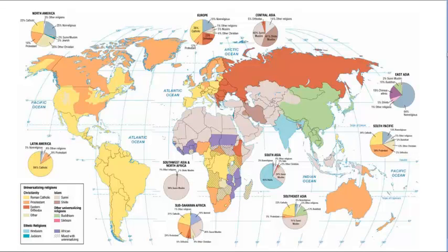This is figure 6.3 dealing with the spatial distribution of religions. It compares the universalizing religions with ethnic religions around the world. The three most important universalizing religions are Christianity, Islam, and Buddhism.